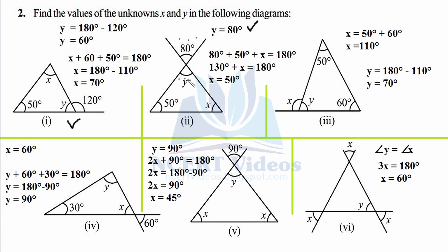Now that y is 80 degrees, we apply the angle sum property: 80 plus 50 plus x equals 180 degrees. Adding 80 and 50 gives 130. Transposing: 180 minus 130 equals 50 degrees. So x equals 50° and y equals 80°.